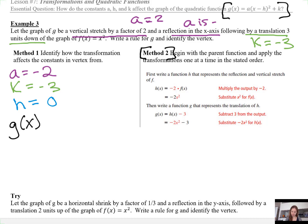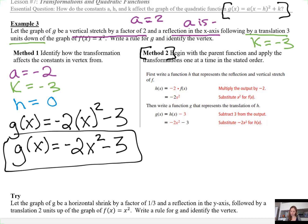h equals 0. I don't even need to list it. Let's go ahead and write g(x) = -2(x - 0)² - 3. I can rewrite this as g(x) = -2x² - 3. I am also supposed to identify the vertex, so in vertex form the vertex is (h, k), and I've listed h and k here, so the vertex of this parabola is (0, -3).